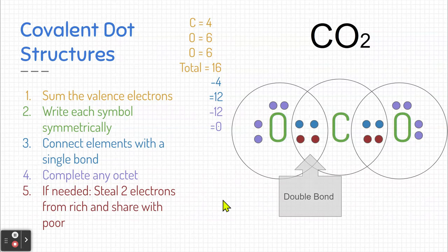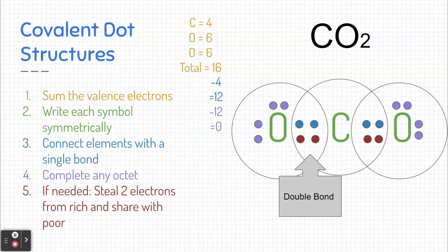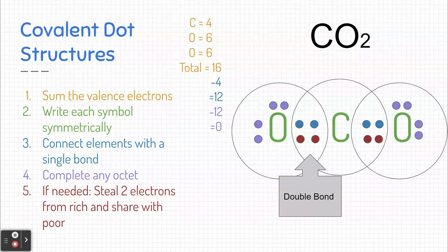So these steps can be used for many covalent dot structures. Again, step number one, add up all the valence electrons. Step number two, write each of the element symbols on the paper. Try to be somewhat symmetrical with them.